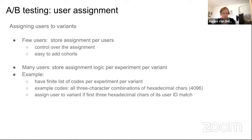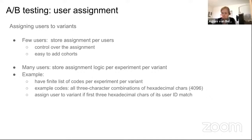It is also easy to add cohorts — for example, specifying that a particular variant should only contain new users, or that every variant should have exactly as many regular users as new users. However, if you have a lot of users, storing all assignments per user can be prohibitively heavy, and it can quickly get complicated when you have many experiments.